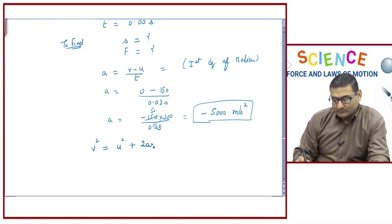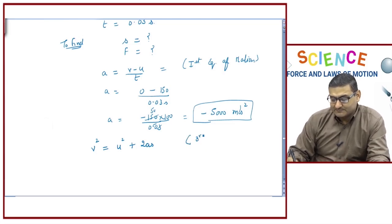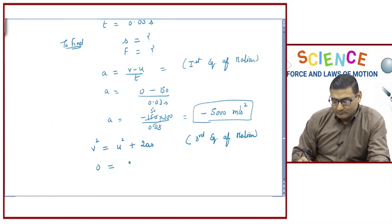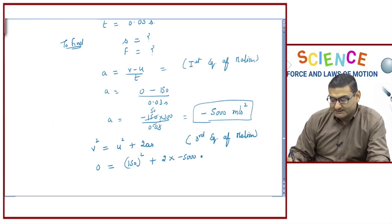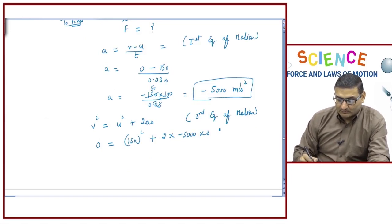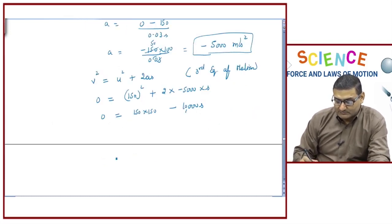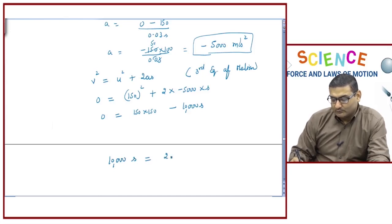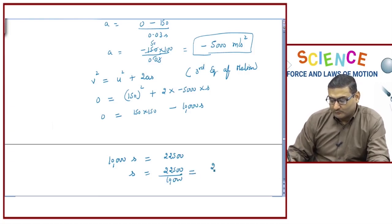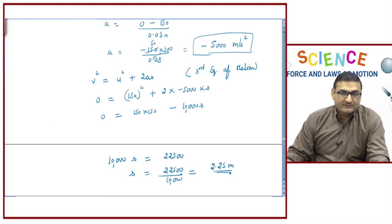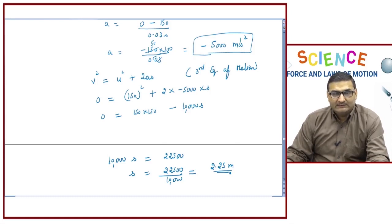Using the third equation of motion: v² = u² + 2as. Substituting: 0 = 150² + 2 × (−5000) × s, so 0 = 22500 − 10000s. Therefore 10000s = 22500, giving s = 22500/10000 = 2.25 meters. This is the distance the bullet penetrates into the wooden block.